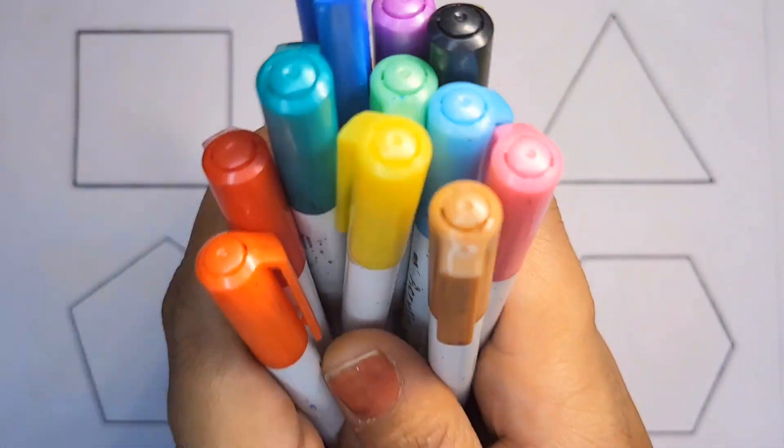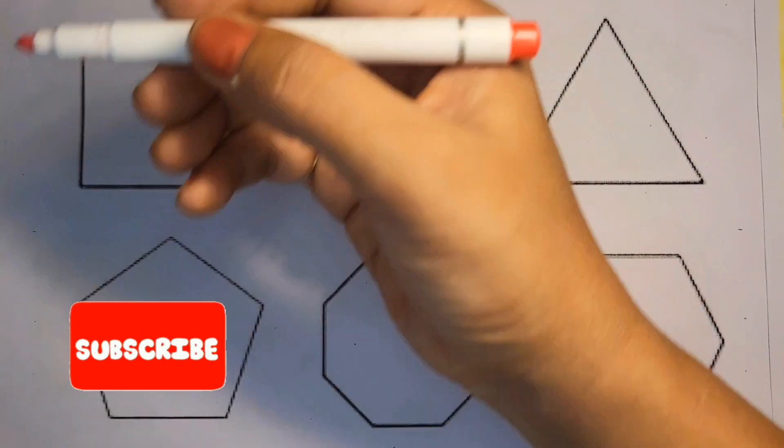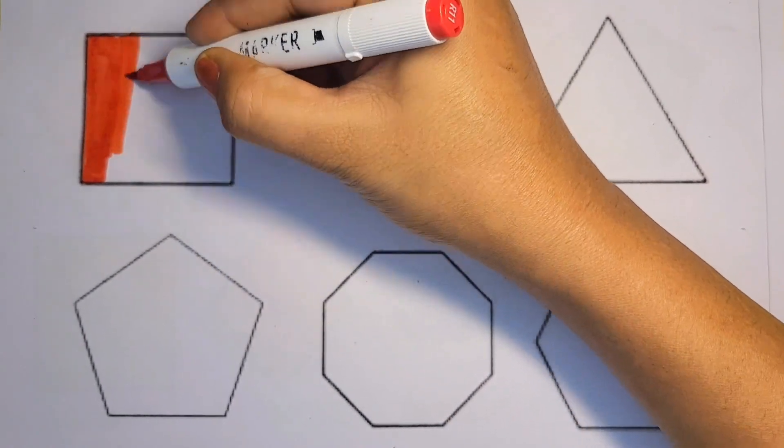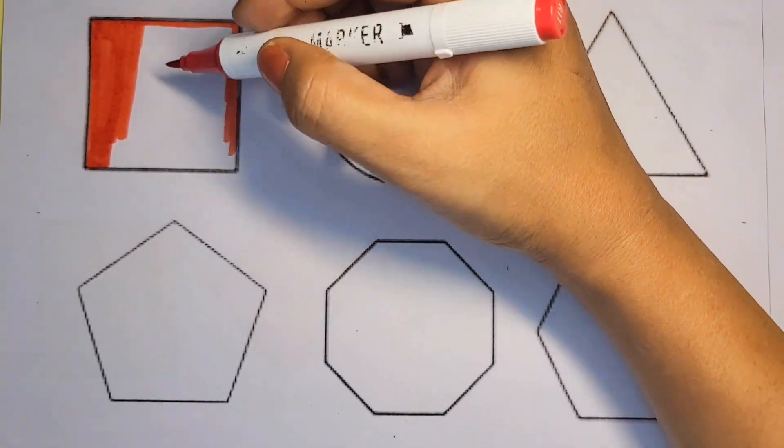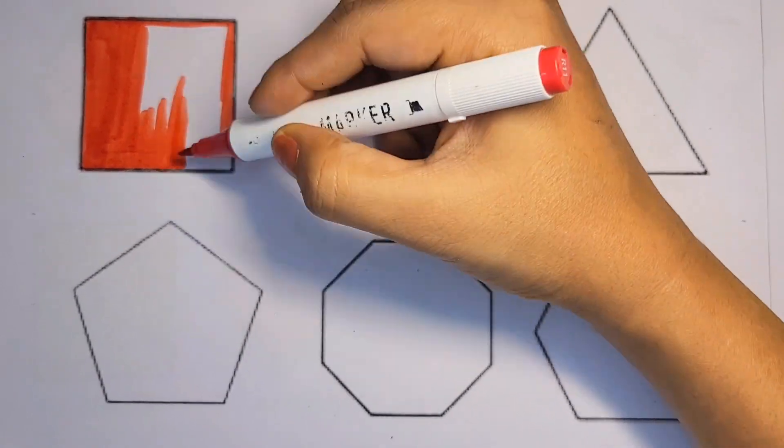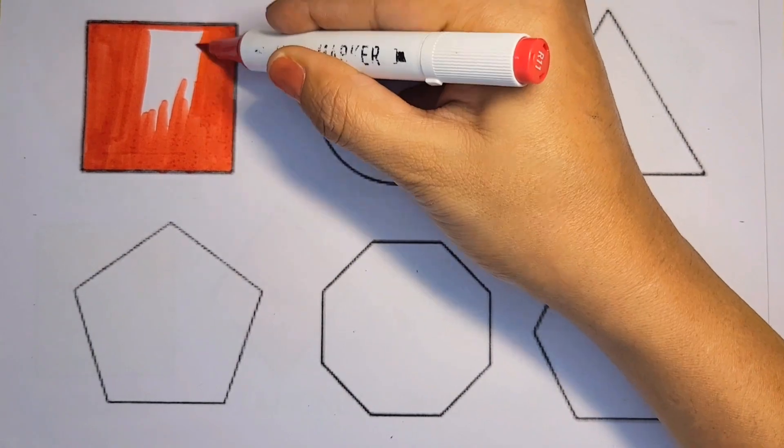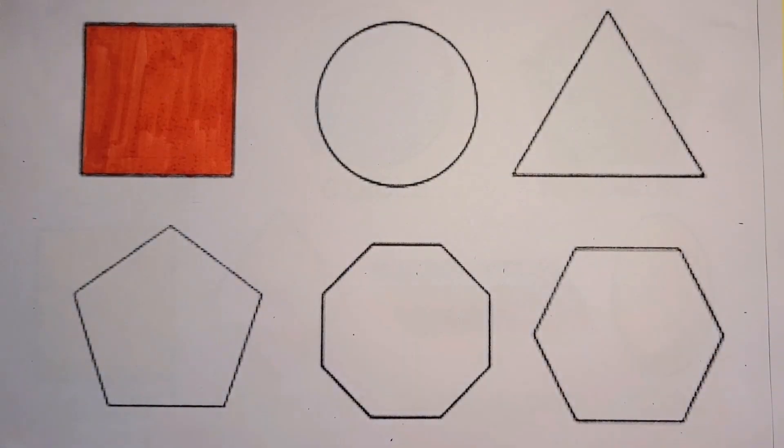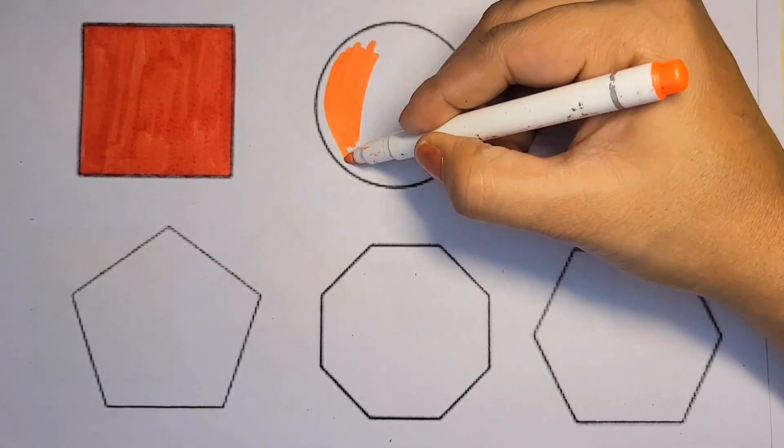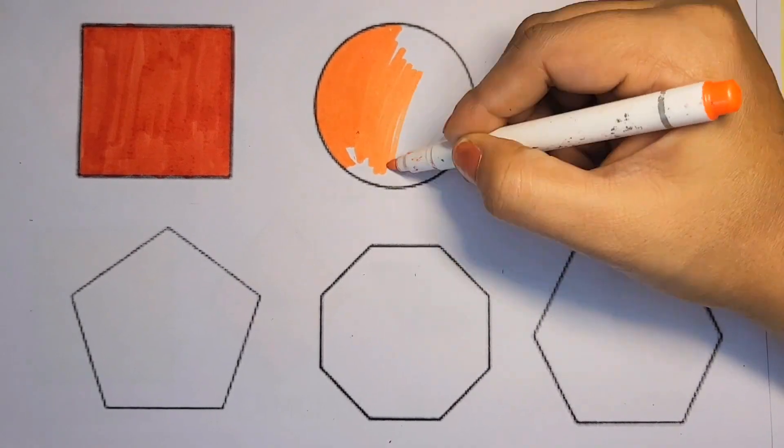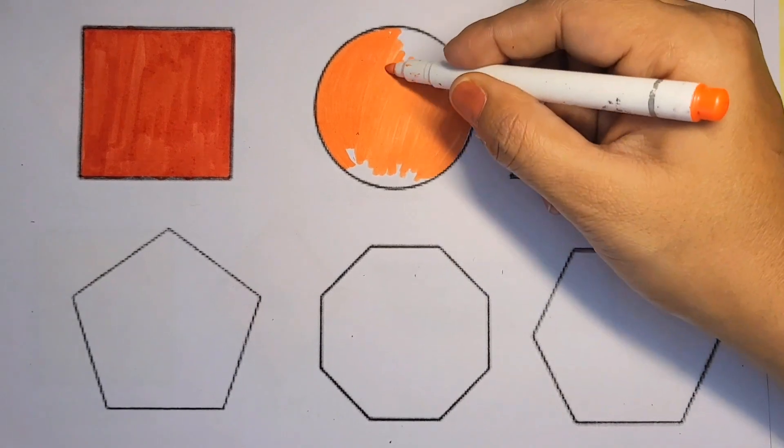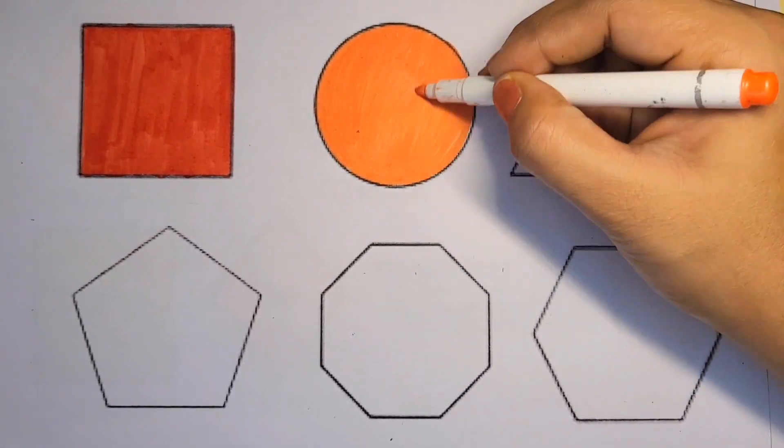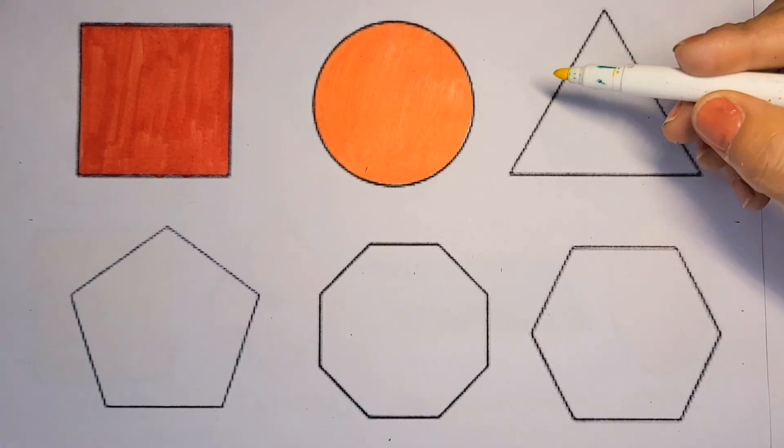Let's start. Colors. Red color, where are you? Here I am. Square, red color. Circle, orange color. Triangle, yellow color.